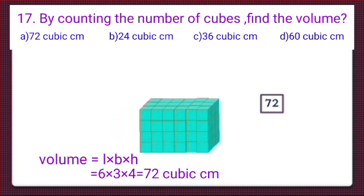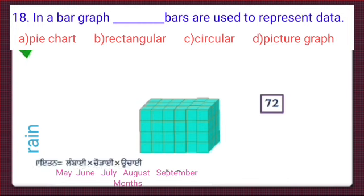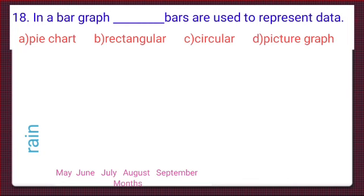Now look at the options. We can see option A, 72 cubic centimetres, is the right option, and we will put a tick mark at option A. Question number 18 is: in a bar graph, dash bars are used to represent data. The 4 options are option A is pie chart, option B is rectangular, option C is circular, and option D is pictograph.